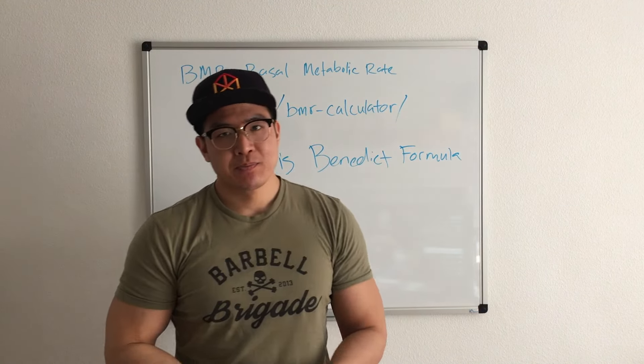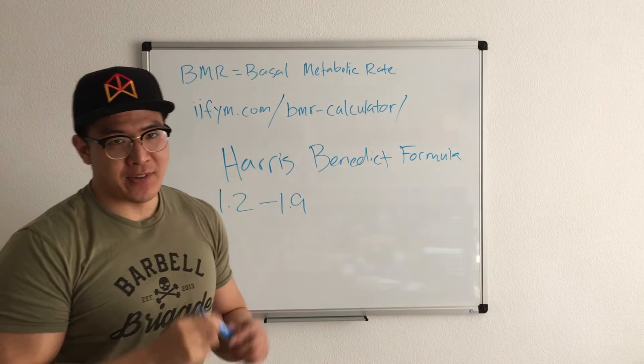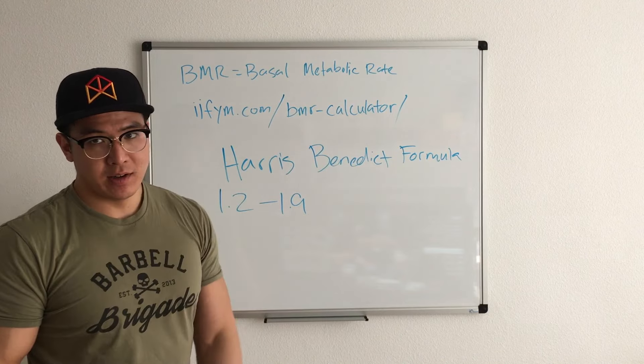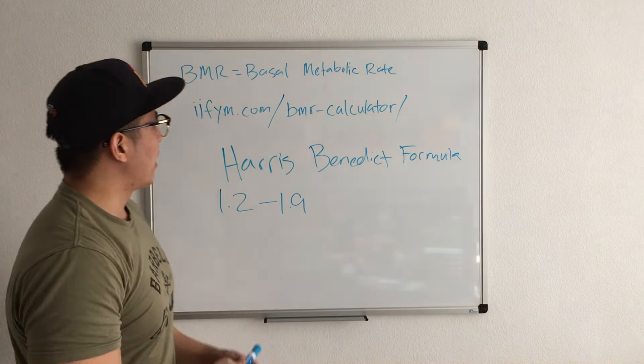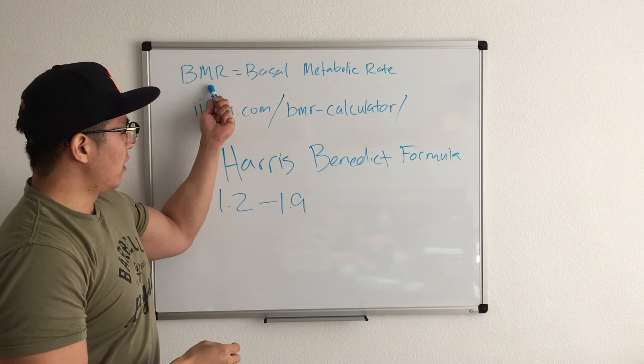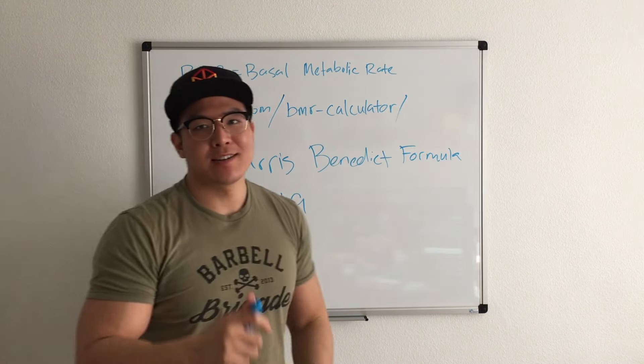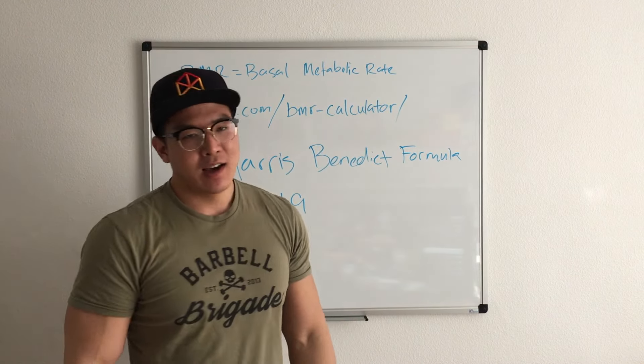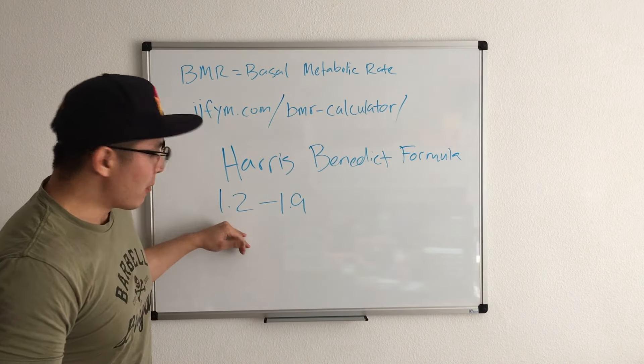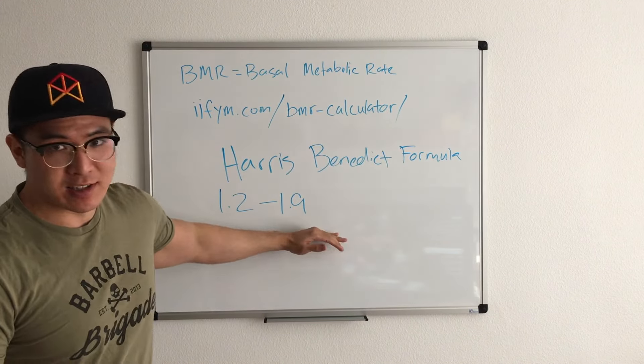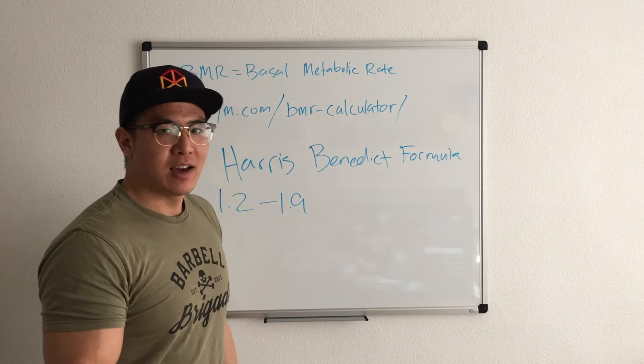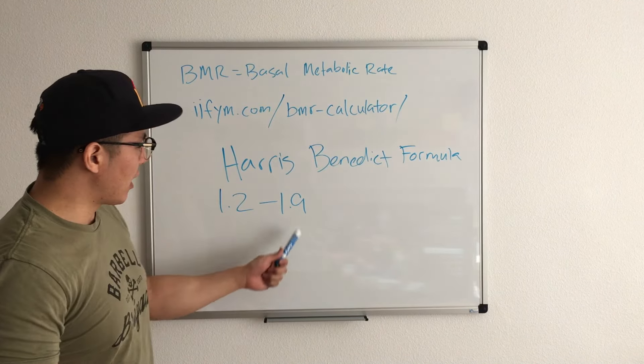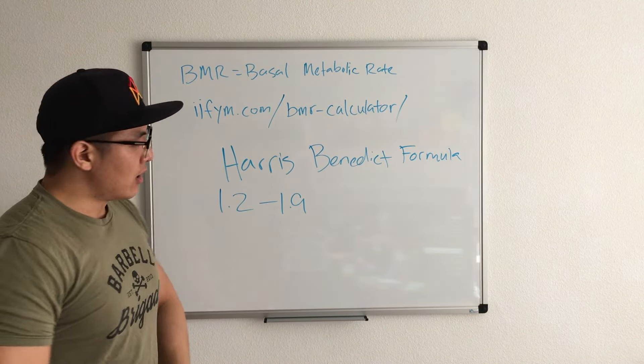Now you guys figured out your BMR. Now we gotta find out your activity levels. You guys can Google this, but find out your activity level—just type in Google 'Harris Benedict formula.' It'll break down what you should multiply your BMR by based on your activity levels. So let's say you have a sedentary lifestyle—desk job, exercise once or twice a week—you just multiply your BMR by 1.2. But the other extreme end, let's say you're a professional athlete or a collegiate athlete that trains twice a day, six to seven days a week, you multiply by 1.9.